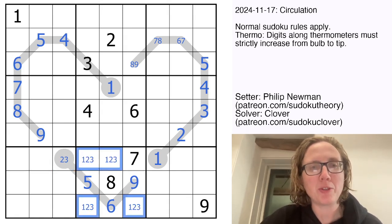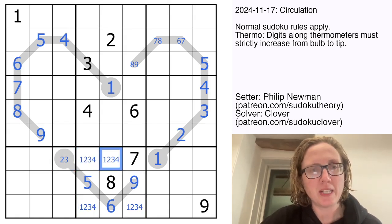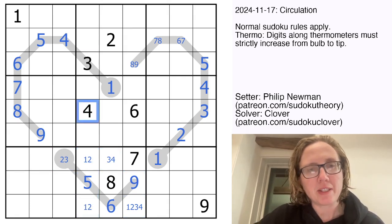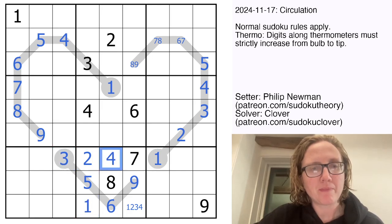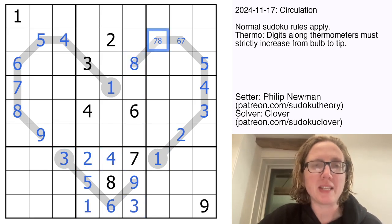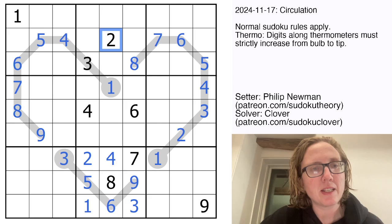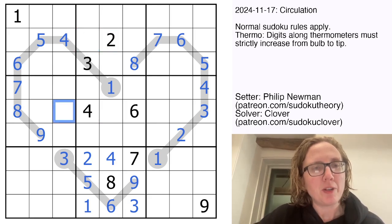Three and four are already in this column so that's going to be a one two pair which resolves using the one there and that region is done. Now I have a nine here which tells me that's an eight which propagates. Now what?